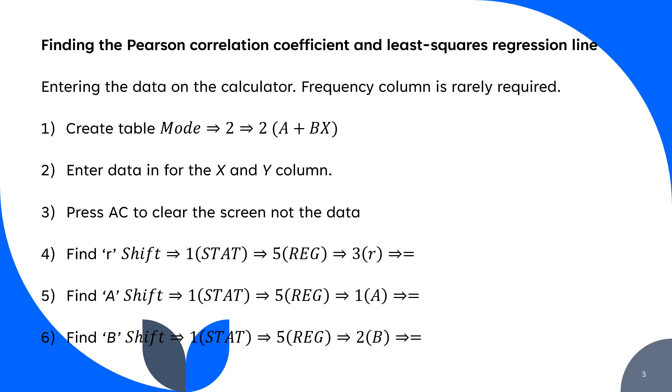Create your table by pressing mode 2, 2. If you've got a different calculator, as long as you press the A plus Bx button, that's what you are looking to create. You'll end up with an x and a y column. Once you've entered your data into the x and its corresponding y, you don't need to do it in numerical order, but you need to make sure the points match. The x value you enter must correspond to the y value that goes with it because it's a set of coordinates.